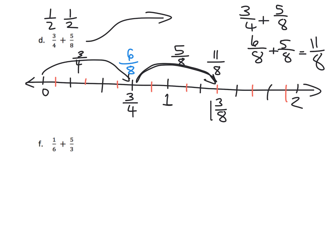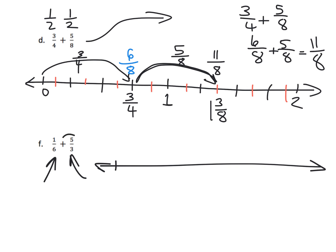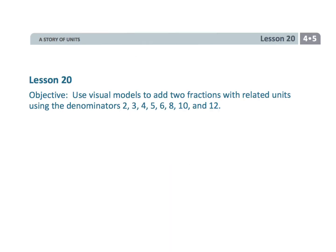Cautionary tale: these are the smaller units and those are the larger units. The fifths are the larger units, so when you draw your picture you're going to want to draw your five-thirds before you draw your one-sixth. And that wraps up grade four module five lesson 20, using visual models to add with common denominators. We're not quite at the standard algorithm yet, but we're getting close.